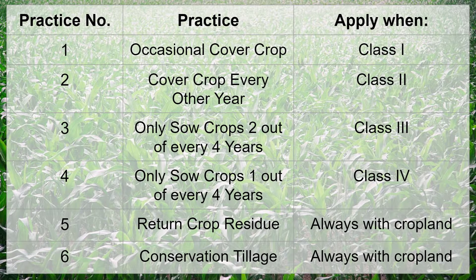Practice number three: only sow crops two out of every four years — apply when your land is class three. Practice number four: only sow crops one out of every four years — apply when your land is class four. Practices five and six should always be used with cropland: return crop residue and conservation tillage.